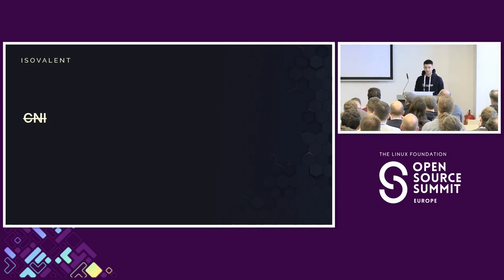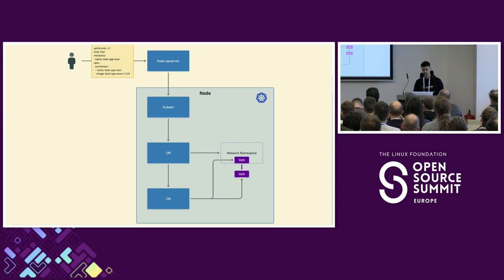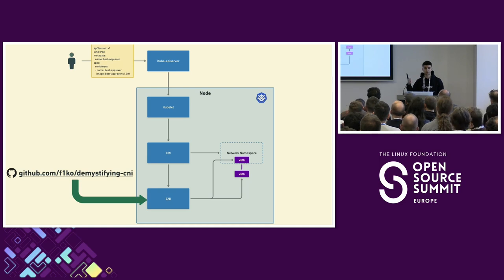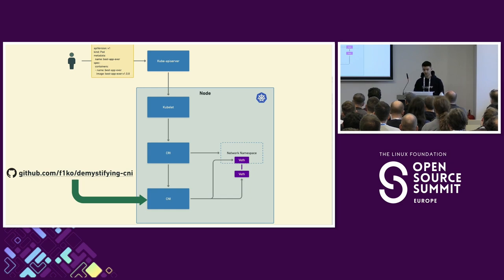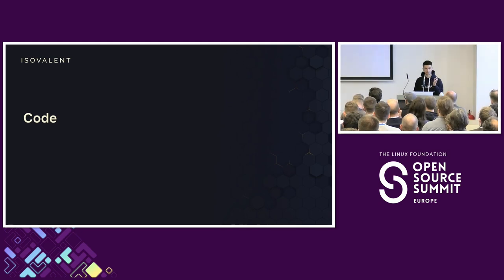Regarding CNI — it's strikethrough because we're not going to cover anything related to networking in detail. The usual flow is: CRI creates the network namespace and then calls upon a CNI, which does some kind of network configuration. If you want to know more about what the CNI does, there is another repository and talk available — it's written like a blog post so feel free to check it out. For now, CRI creates the network namespace and that's it.